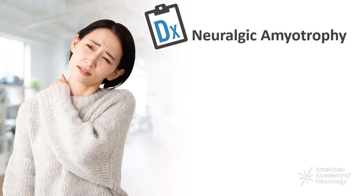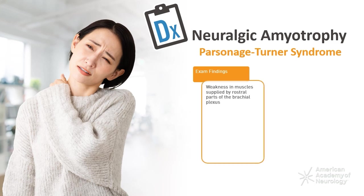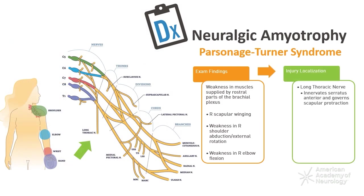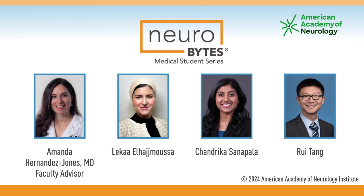Our patient is diagnosed with a type of brachial plexopathy known as neuralgic amyotrophy, also referred to as Parsonage-Turner syndrome, that occurs idiopathically. Her exam showed weakness in muscles supplied by the rostral parts of the brachial plexus, including scapular winging, weakness in right shoulder abduction and external rotation, and weakness in right elbow flexion. This indicates injury primarily to the long thoracic nerve, which innervates the serratus anterior and governs scapular protraction, and to the upper trunk of the brachial plexus, leading to the weakness in shoulder abduction, external rotation, and elbow flexion. For more information on brachial plexopathy, including a review article, please see the course resources, and for more information on neurologic conditions, please visit aan.com.